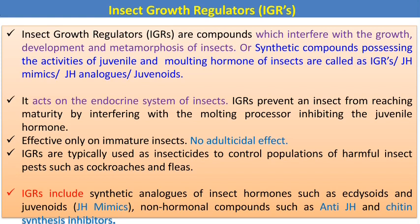The next category is IGR — Insect Growth Regulators. IGRs interfere with the growth, development, and metamorphosis of insects, or are synthetic compounds possessing activities of juvenile and molting hormones. They are also called juvenile hormone mimics, juvenile hormone analogues, or juvenoids. IGRs act on the endocrine system of insects and are effective only in immature stages, with no adulticidal effect. They include JH mimics, anti-JH compounds, and chitin synthesis inhibitors.